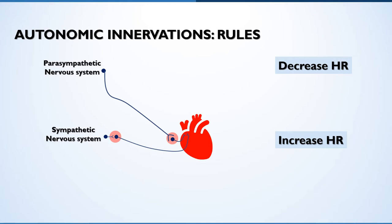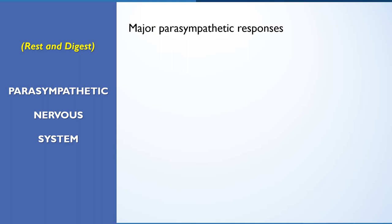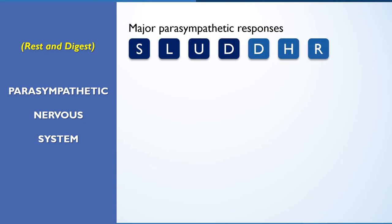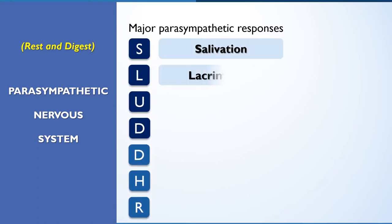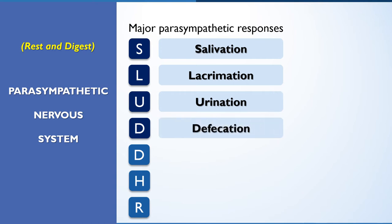Let's see some rules. The parasympathetic or craniosacral outflow is an energy-saving and restorative system that helps in digestion of food and absorbs it to provide energy, while wastes are eliminated. The major parasympathetic responses can be memorized as SLUD and DHR. These letters stand for Salivation, Lacrimation, Urination, Defecation, and DHR stands for decrease in heart rate.